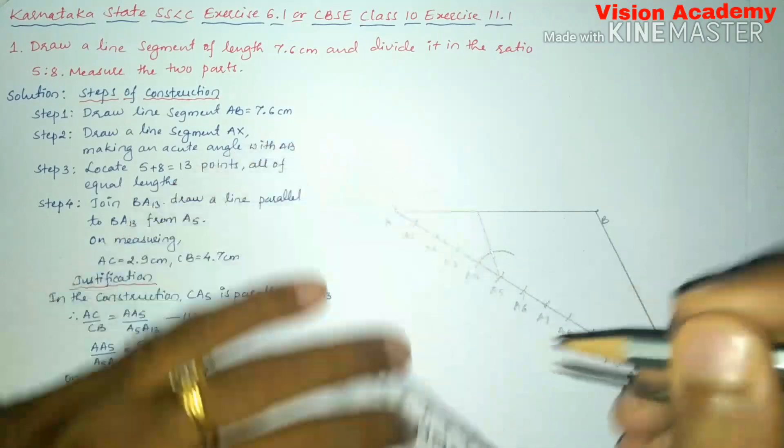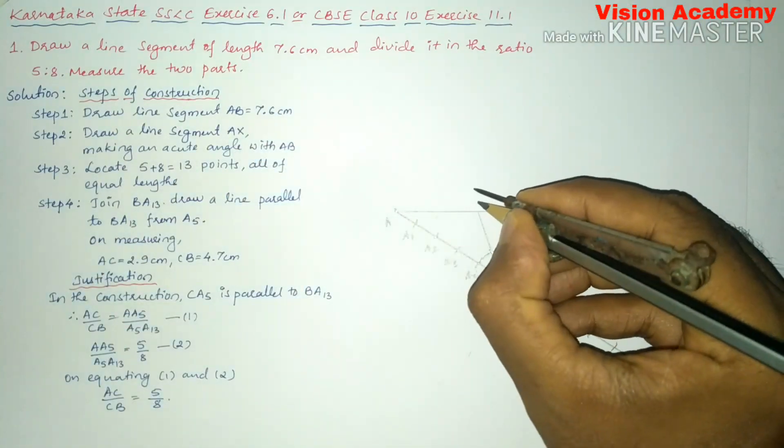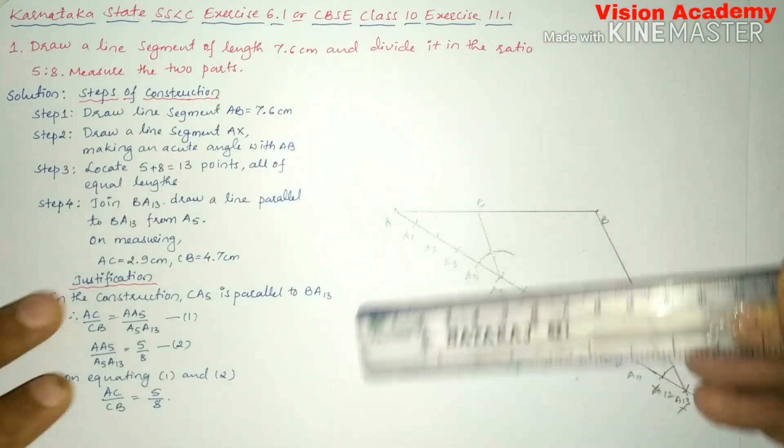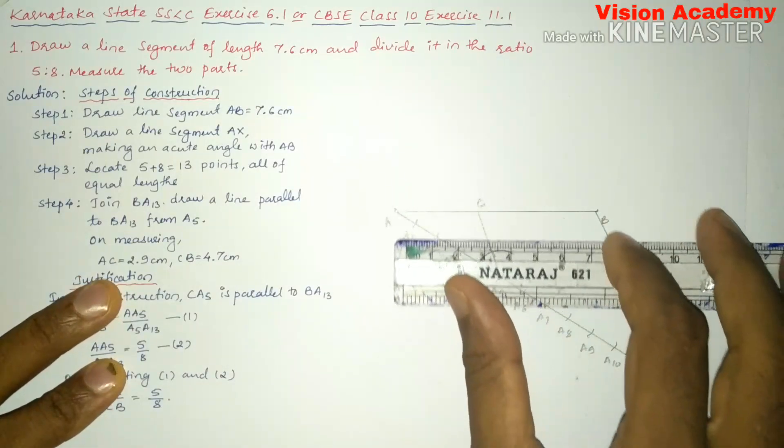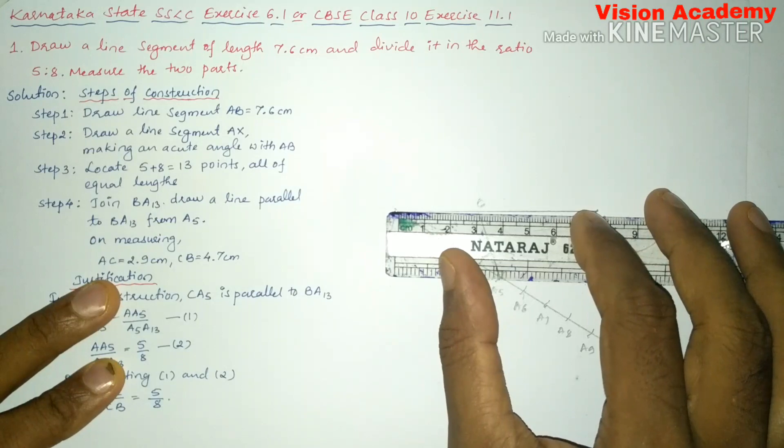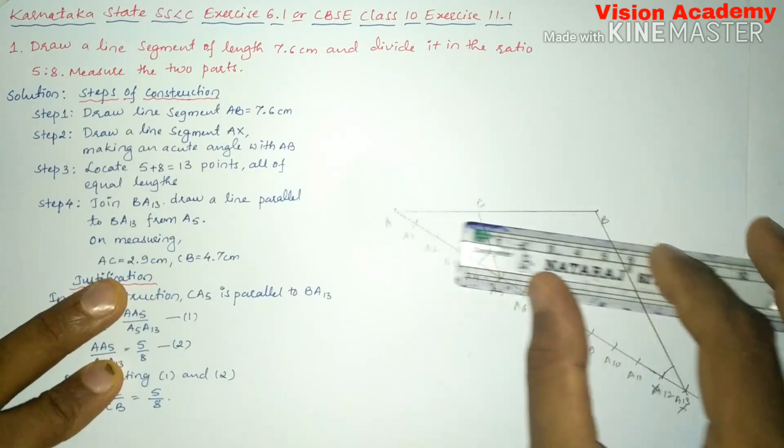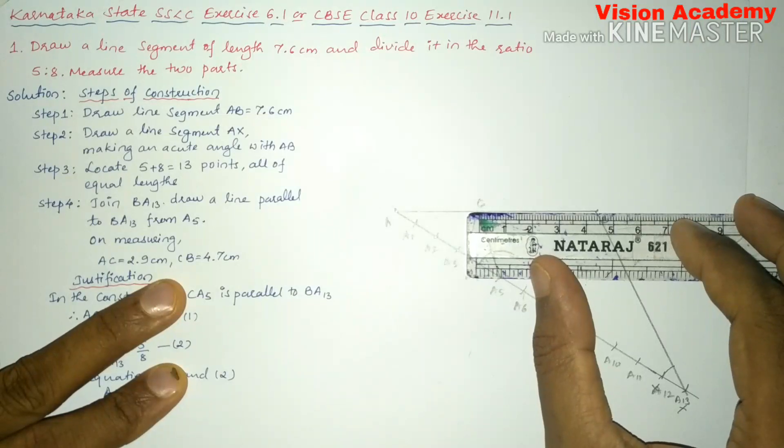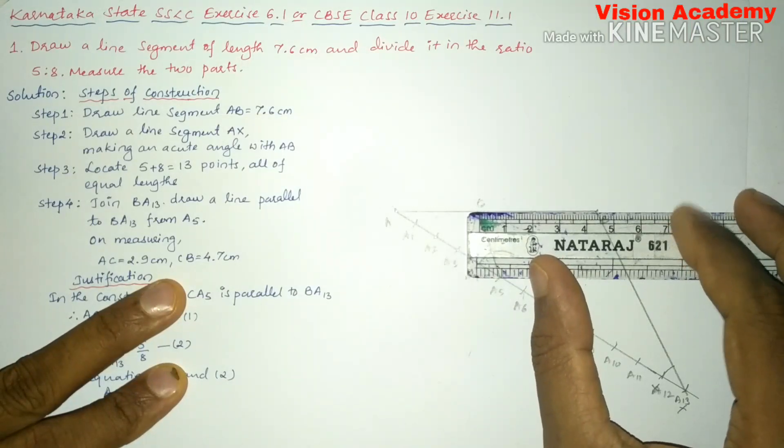So let us write this point as C. Here you can measure AC is 2.9. You can see it is exactly 2.9. Next, CB is 4.7. Yes, it is 4.7.